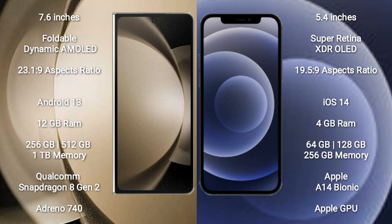Samsung Galaxy Z Fold 5 comes with 12GB RAM and 256GB, 512GB, and 1TB internal storage options. It is powered by the Qualcomm Snapdragon 8 Gen 2 processor with an Adreno 740 GPU.